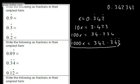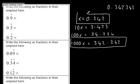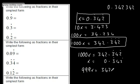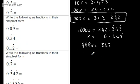Hopefully now you're spotting the patterns. So what we've got is x equal to 0.342 recurring and 1000x equal to 342.342 recurring. So we write 1000x equal to 342.342 recurring and then 0.342 recurring underneath. Subtracting down gives us 999x equal to 342. And from here we simply divide through, so x is going to be 342 over 999.